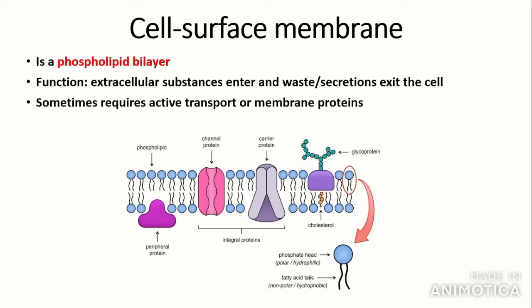This is what a phospholipid bilayer looks like — two layers of phospholipids with the phosphate group head facing outwards and the fatty acid tails facing inwards. You can also see membrane proteins: two types, channel proteins and carrier proteins. We also have glycoproteins and cholesterol molecules, which will become more important when we move on to the transport across membranes topic.